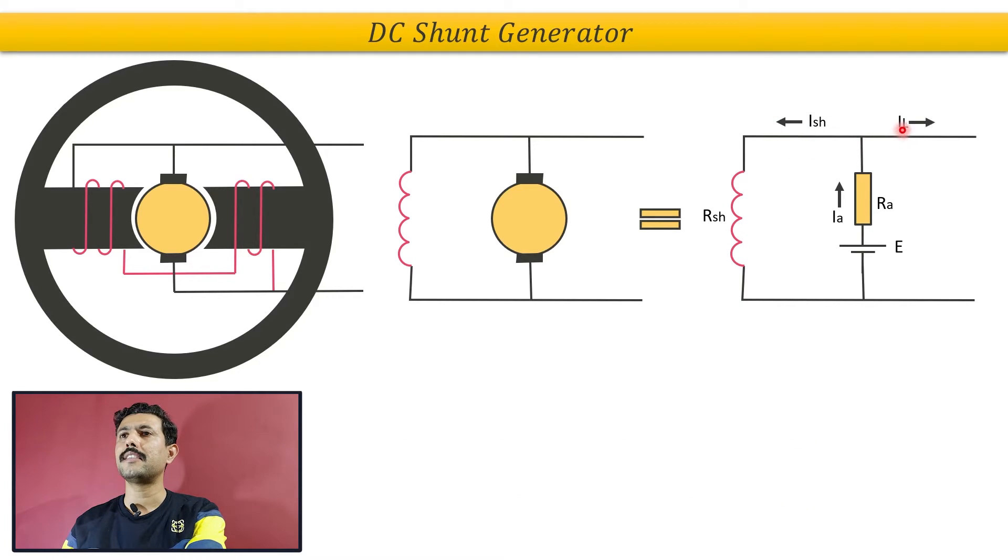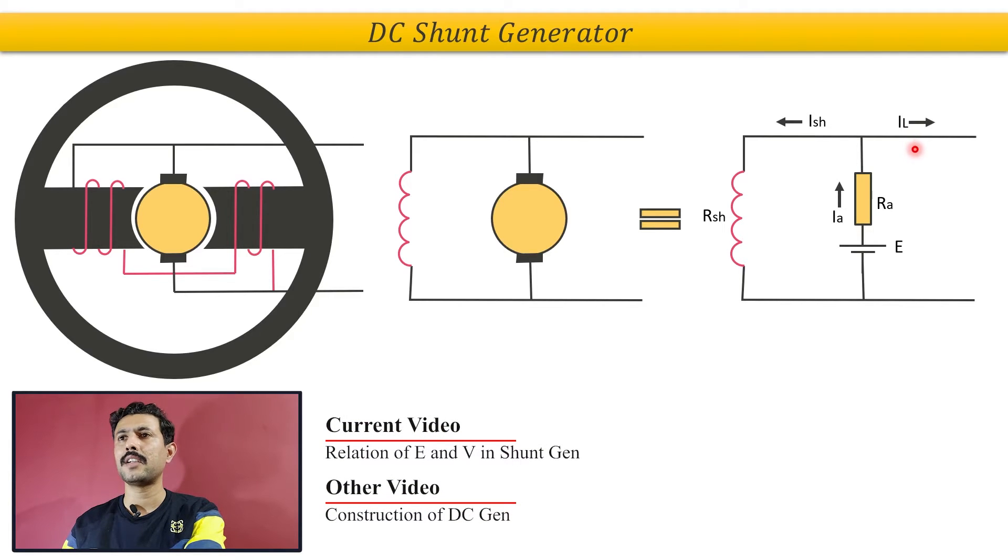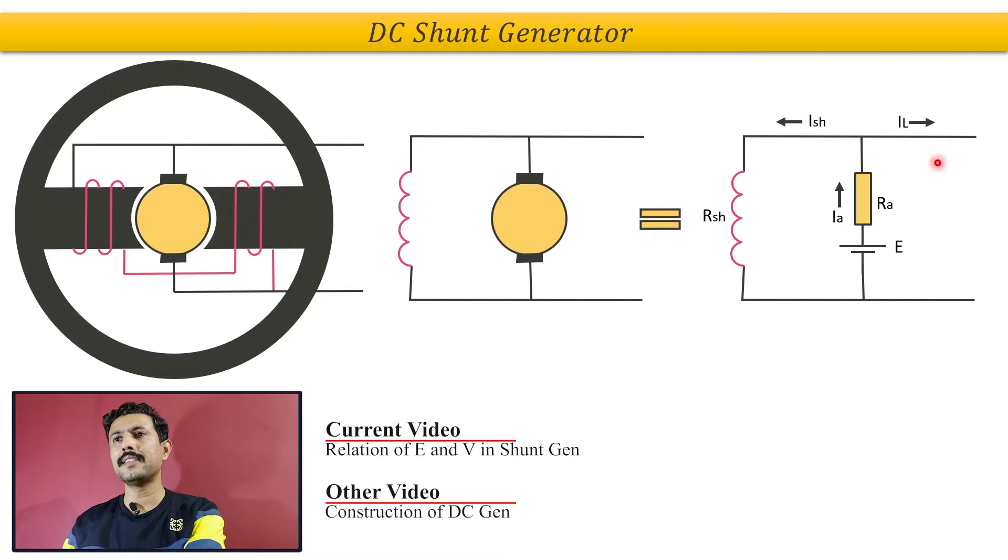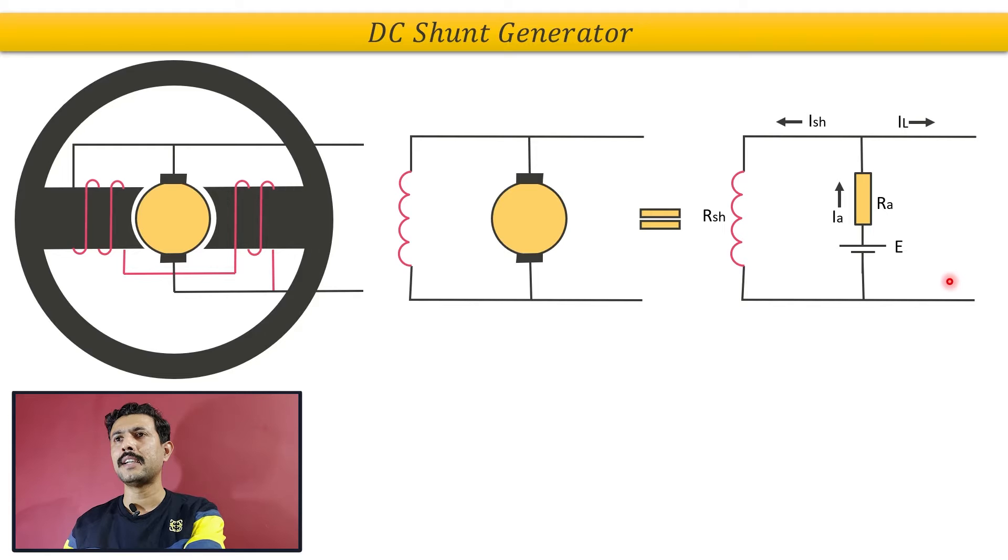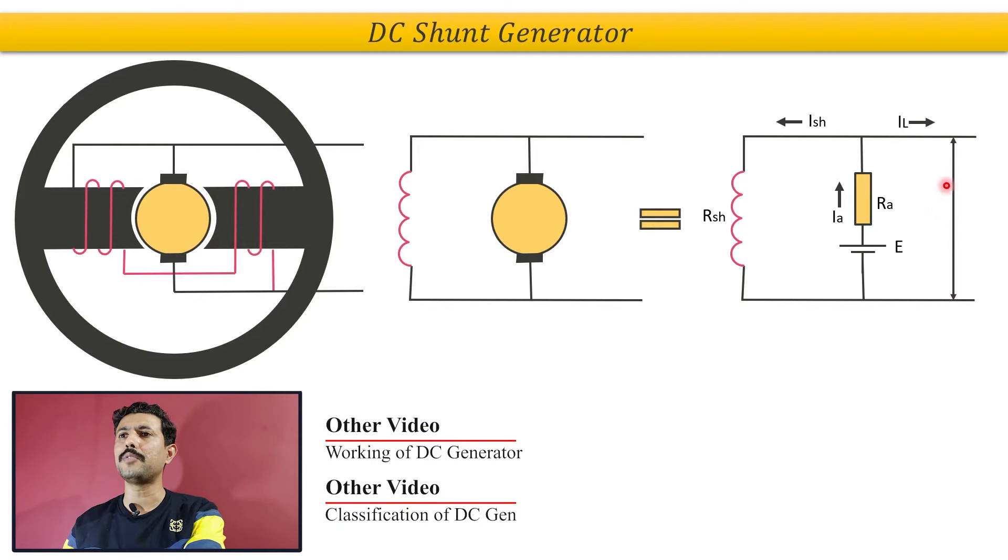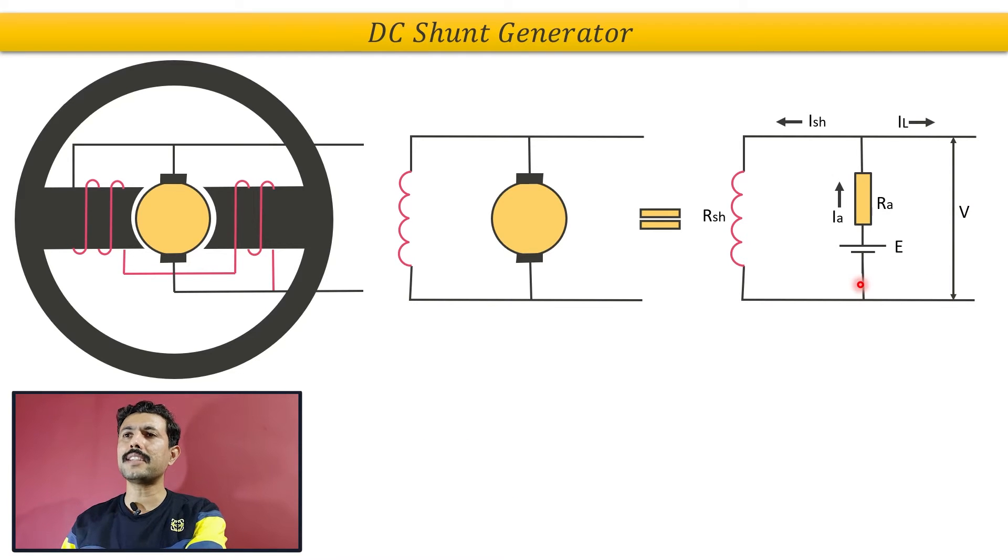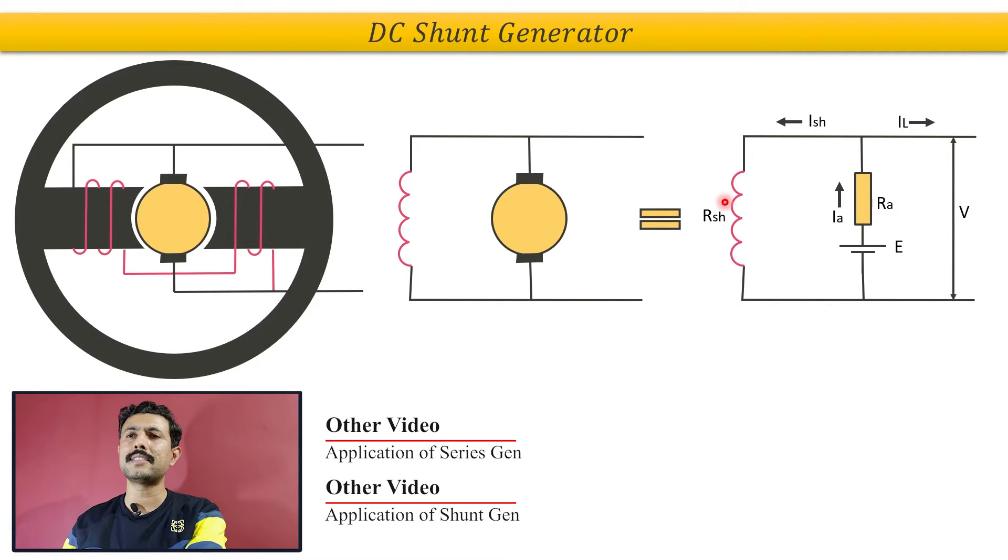One current will go into shunt field winding and that current is known as shunt field current. The other current will go into the load and that is known as load current. These are the two terminals of the generator and the voltage we are getting between these two terminals is known as terminal voltage. So these are the different electrical quantities in shunt DC generator.